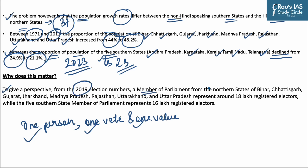To give perspective from the 2019 elections: a member of parliament from the northern states of Bihar, Chhattisgarh, Gujarat, Jharkhand, Madhya Pradesh, Rajasthan, Uttarakhand and Uttar Pradesh represented around 18 lakh registered electors, while the five southern state MPs represented around 16 lakh registered electors. This means the real meaning of one person, one vote, one value is lost in this system.